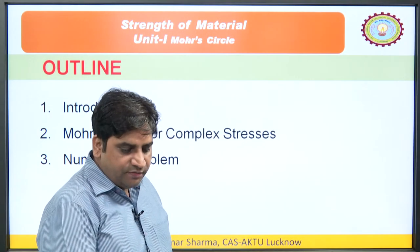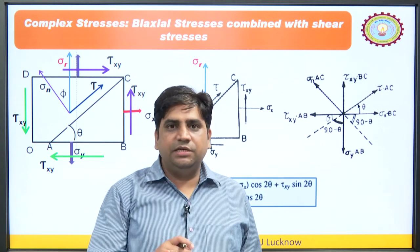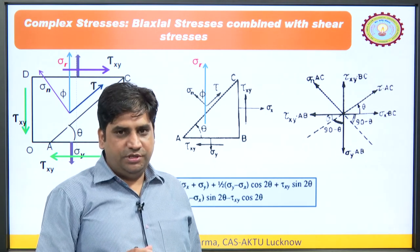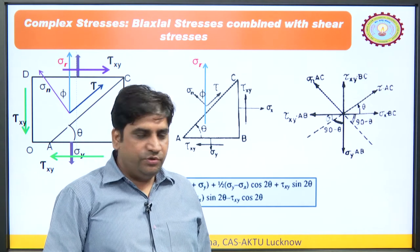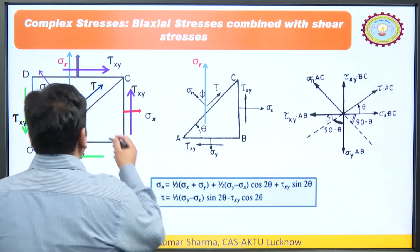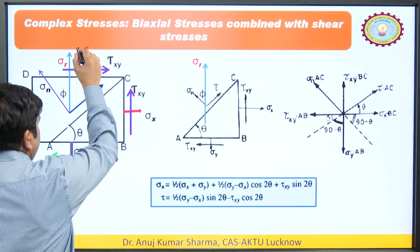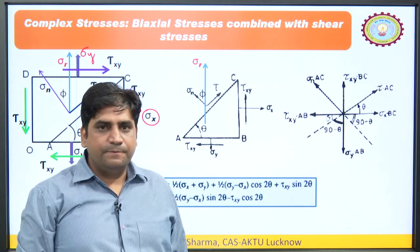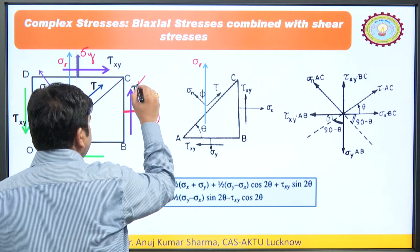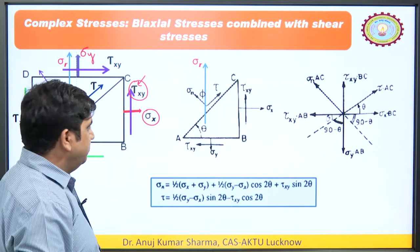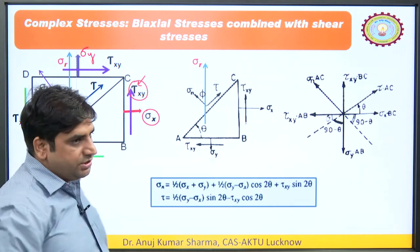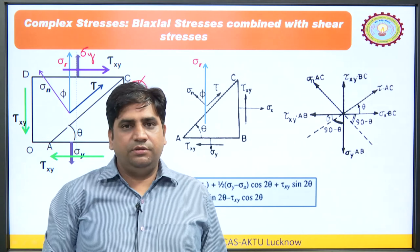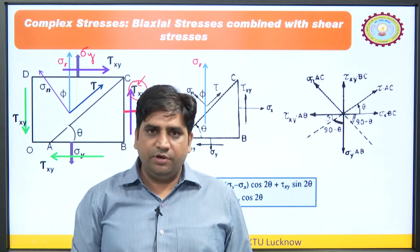In a previous lecture we studied the Mohr circle for biaxial stresses, but here, if we apply shear stress on the object, it becomes the problem of complex stress. In complex stress we have sigma x, sigma y, and along with sigma x and sigma y we have the shear stress. We can see four shear stresses here, and the concept of complementary shear stresses has already been discussed in previous lectures.